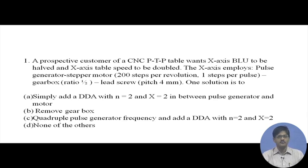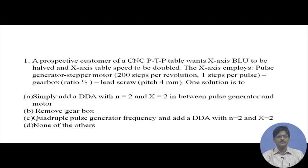A prospective customer of a CNC point-to-point table wants the X-axis basic length unit to be halved and X-axis table speed to be doubled. The X-axis employs a pulse generator stepper motor having 200 steps per revolution and one step per pulse, a gearbox with ratio one-half, and a lead screw with a pitch of four millimeters. Four possible solutions are given to achieve half the basic length unit and double the table speed.